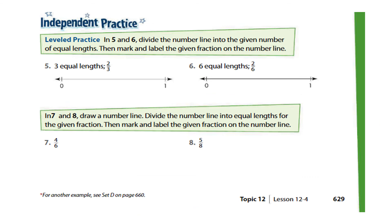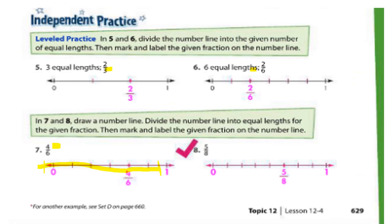From questions five to eight, you have to show the fractions given in the question on the number line. Divide the number line into the number of parts equal to the denominator in that specific question. For example, in question five divide into three equal parts, in question six divide into six equal parts. Draw the number line, write zero and one as endpoints, divide by the denominator, and write the fractions. Here are some sample answers — I hope yours match.